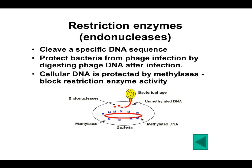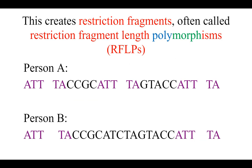If we take that enzyme that always cuts the ATTTA sequence and use it on samples from person A and person B, you can see that in the first person, it found that sequence three times and cut their DNA three times. But person B had a mutation in the middle of that strand, so their DNA only got chopped up twice. Now we have little fragments that are different from one person to the next. So if you think about gel electrophoresis, if we put person A's sample and person B's sample in, they wouldn't look the same after we run them through a gel.